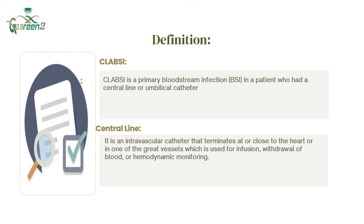There are four different types of central lines according to the site of insertion: the peripheral or PICC line, subclavian line, internal jugular line, and femoral line. The most preferable site is the subclavian site, which is associated with the minimum number of infection incidences.